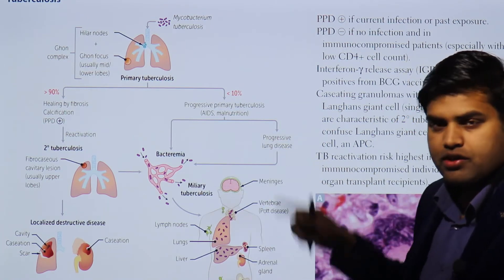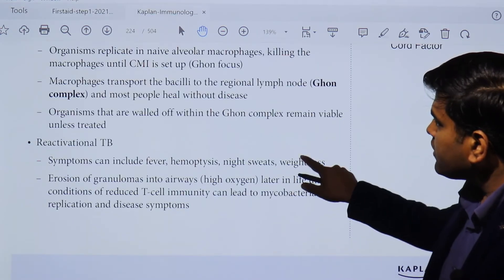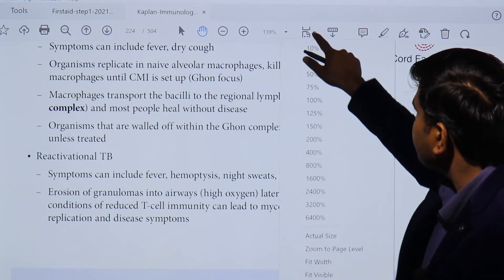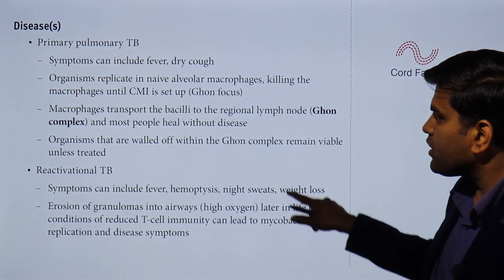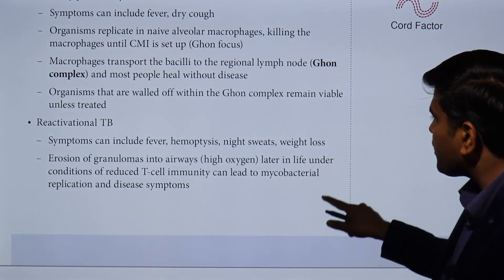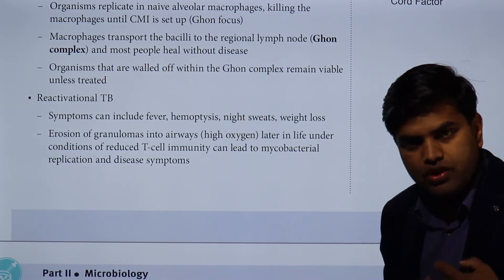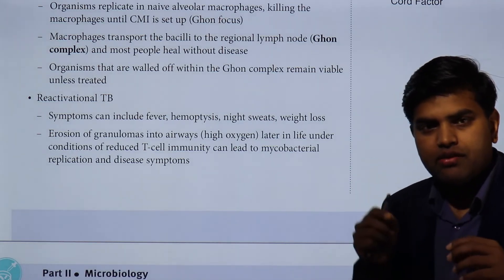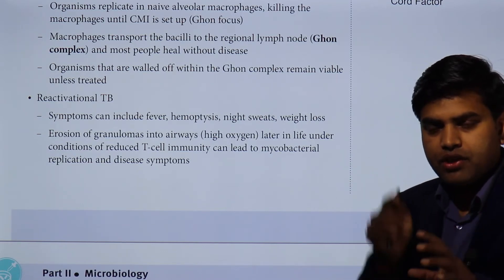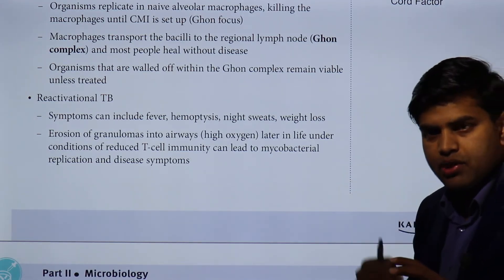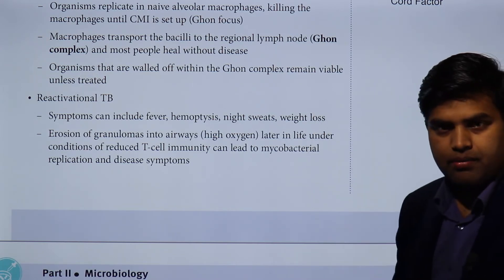In ten percent of cases, if the immune system cannot handle the infection, it disseminates and causes progressive pulmonary tuberculosis. The organisms are walled off within the Ghon complex and remain viable unless treated. The immune system only makes a wall surrounding the bacteria, but inside the bacteria are still viable — if immunity is compromised, they can escape and cause active infection.